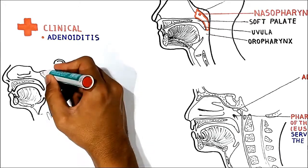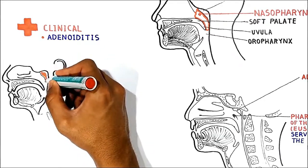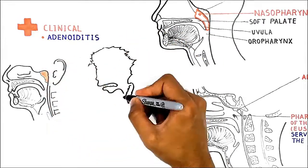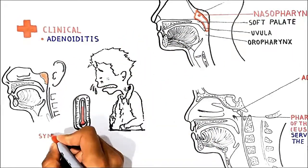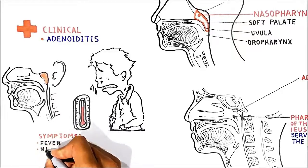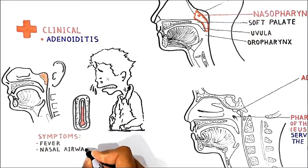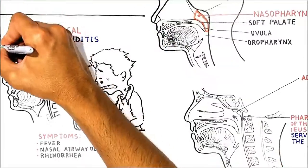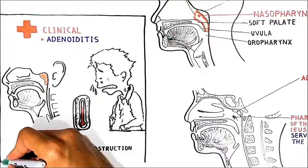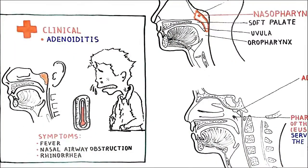Inflamed pharyngeal tonsils appear red and enlarged. Acute adenoiditis is characterized by fever, nasal airway obstruction, and rhinorrhea in viral forms of the disease. The enlarged adenoids can also obstruct the opening of the eustachian tube, which is located close to the adenoids.